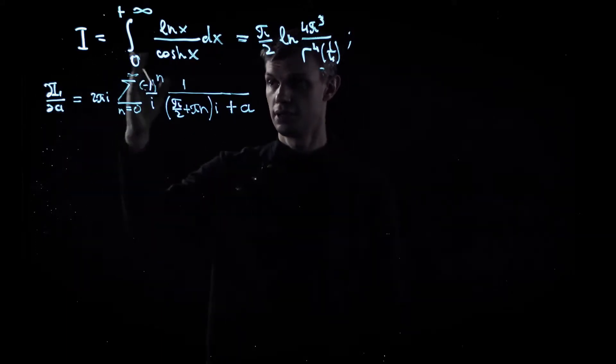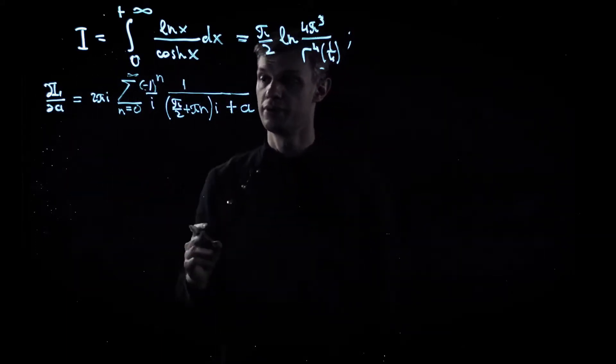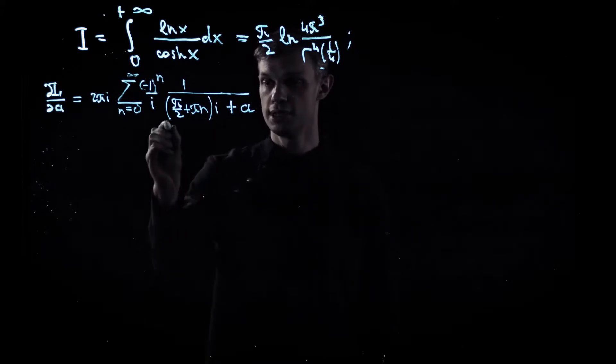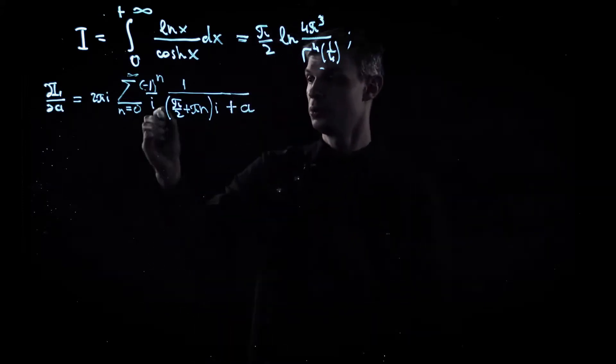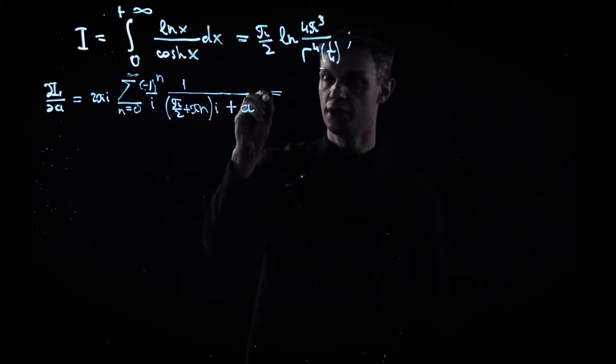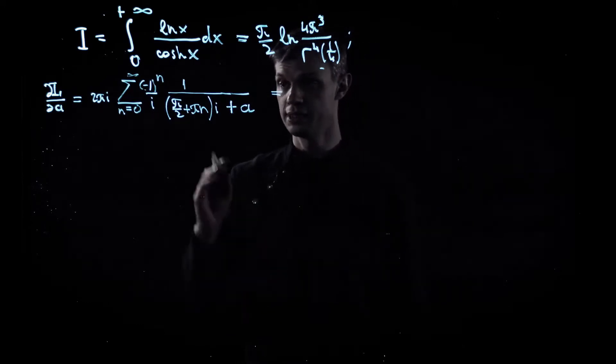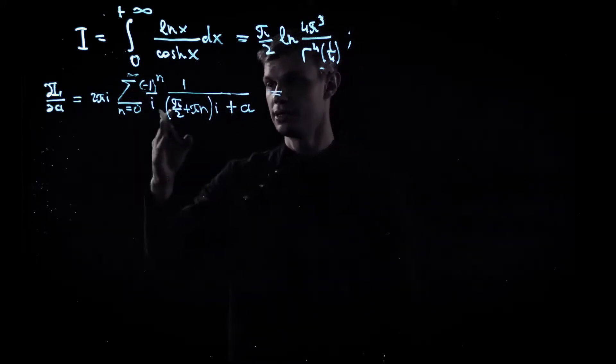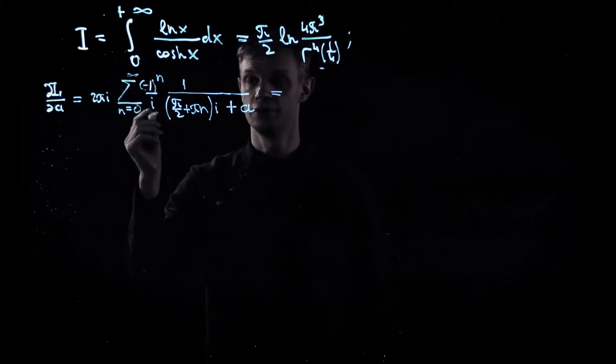Here I rewrote the initial integral in terms of this sum over the residues, which is here as you may notice, and 1 over i is the pre-factor which we figured out on our previous slide. Now let's simplify this expression slightly so it takes a more suitable form.